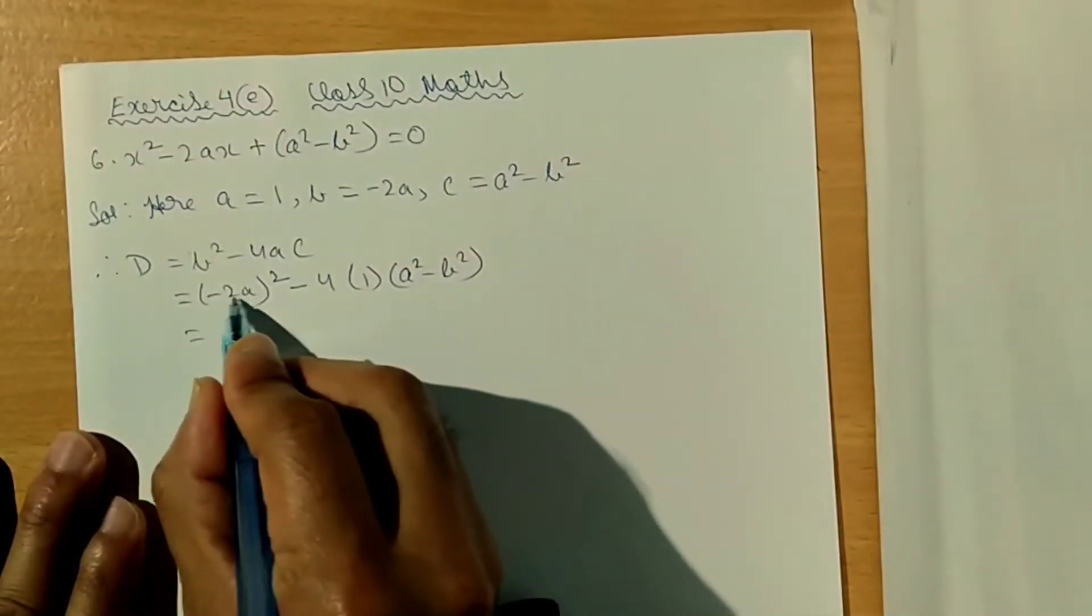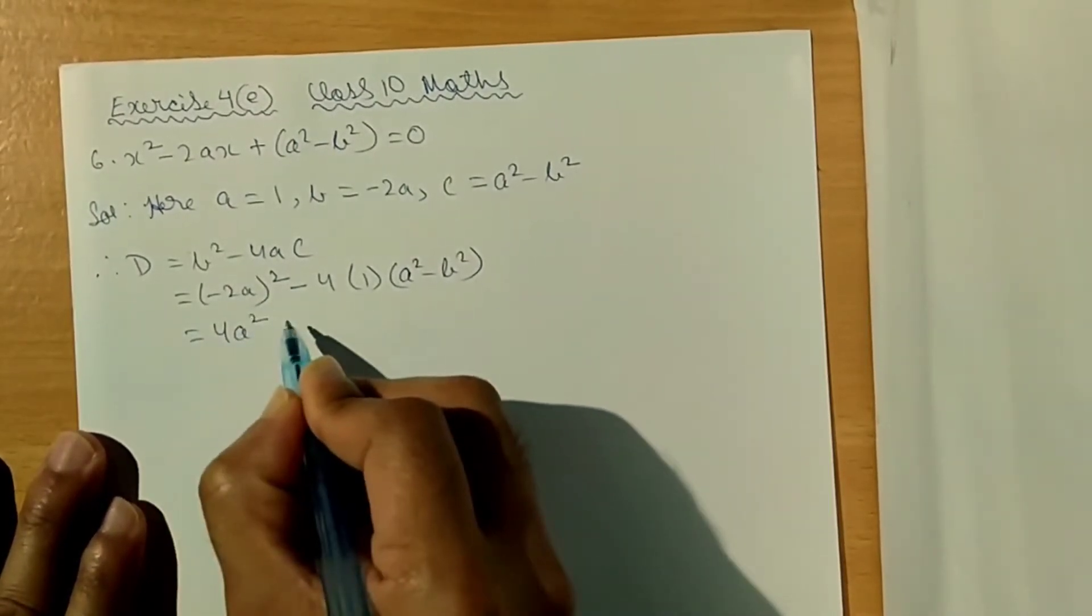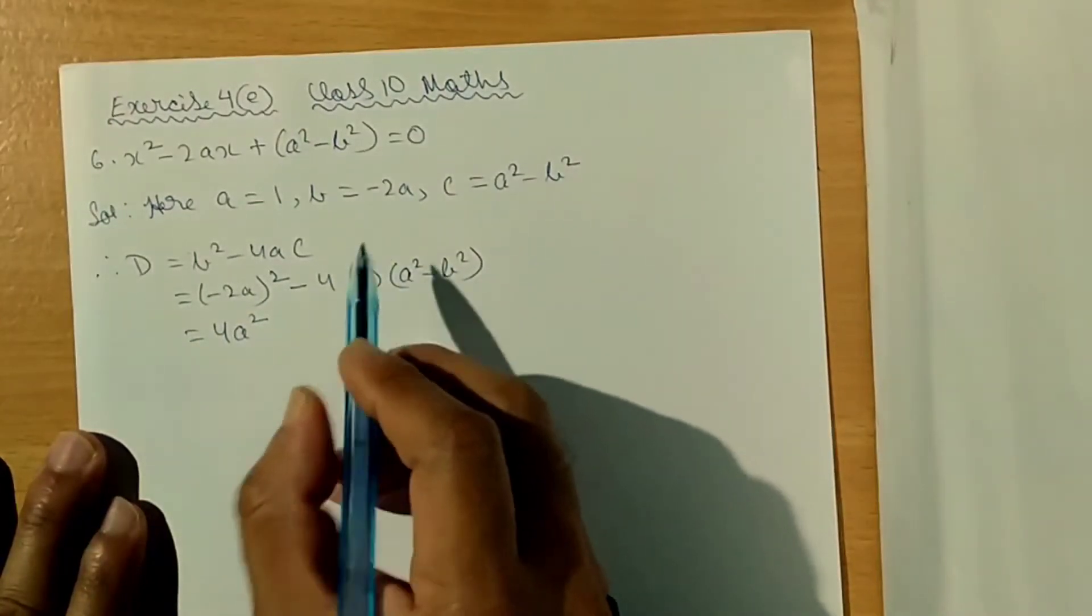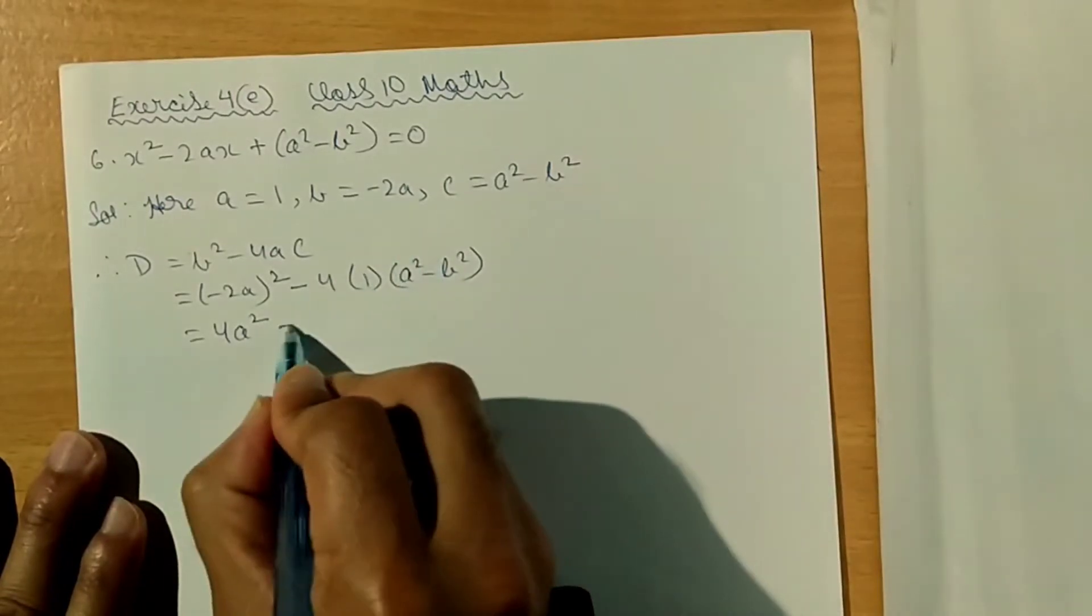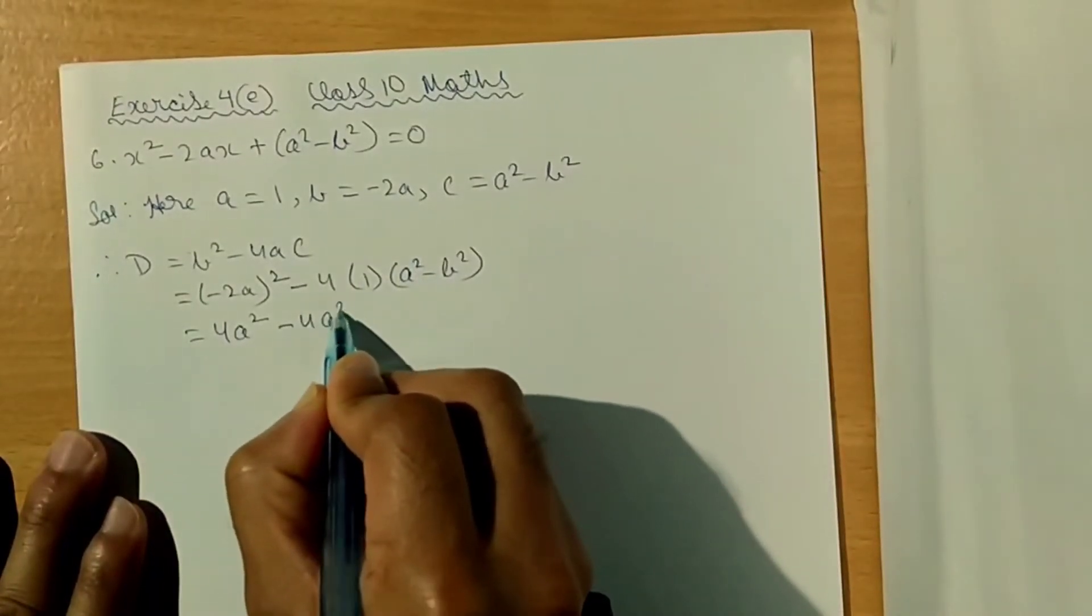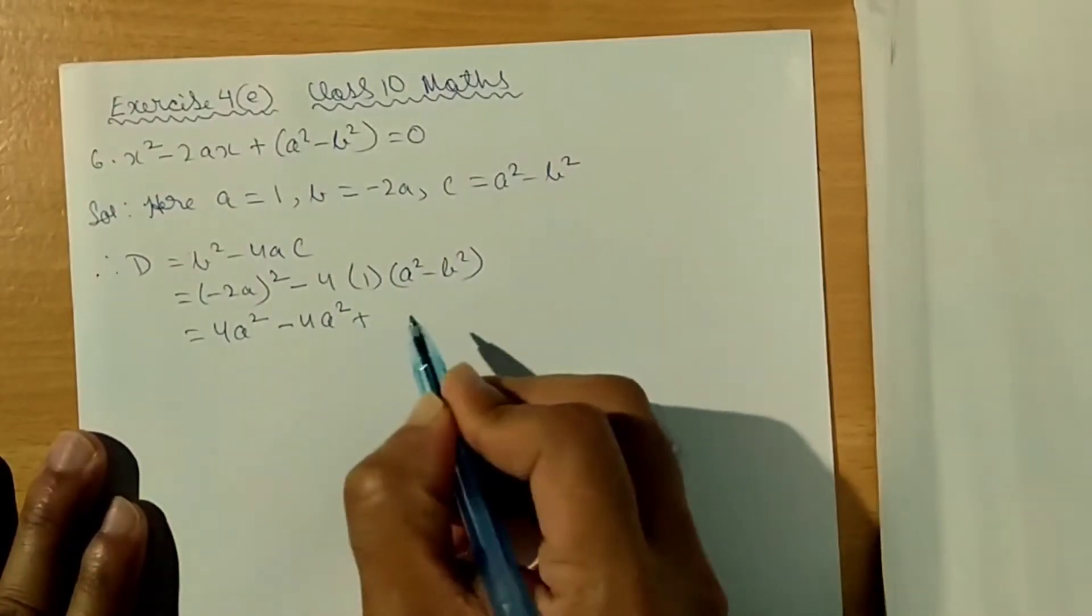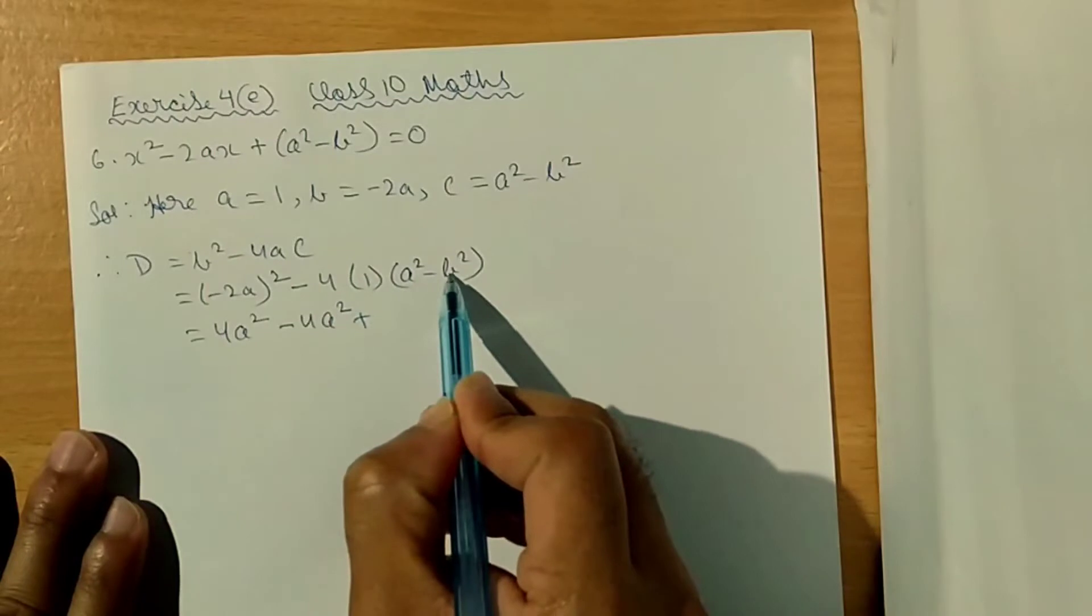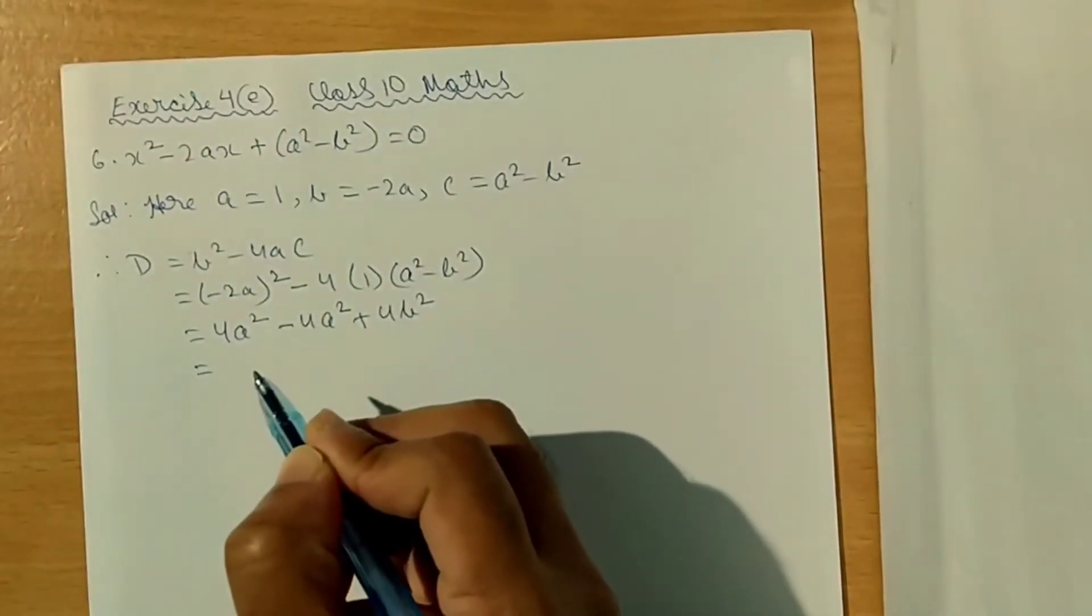Minus into minus the plus, that is 4 into 1, 4 into B squared, 4B squared. And this is equal to 4A squared minus 4A squared.